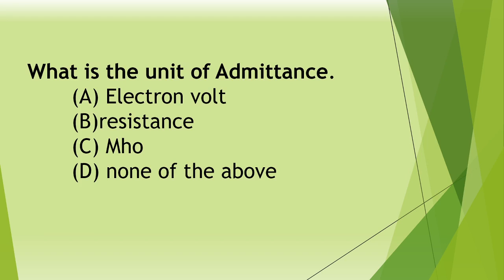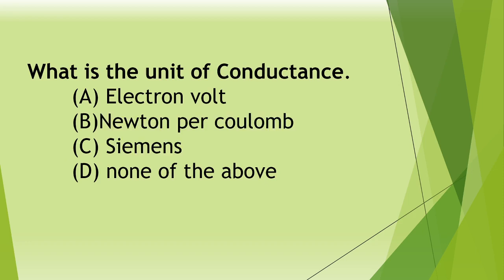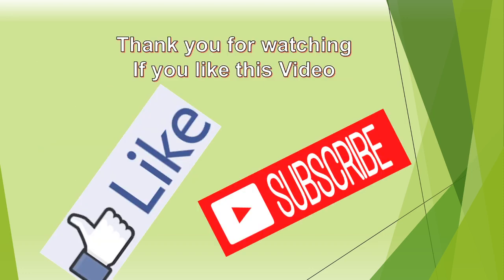Next question. What is the unit of admittance? A Electron volt, B Resistance, C Mho, D None of the above. Answer: C Mho. Next question. What is the unit of conductance? A Electron Volt, B Newton Per coulomb, C Siemens, D None of the above. Answer: C Siemens. Thank you for watching. If you like this video please like and subscribe. Have a good one.